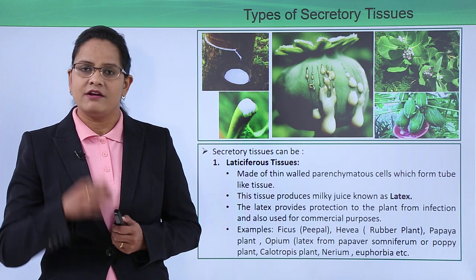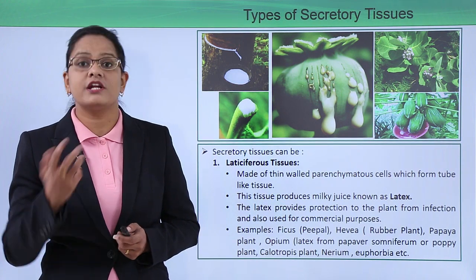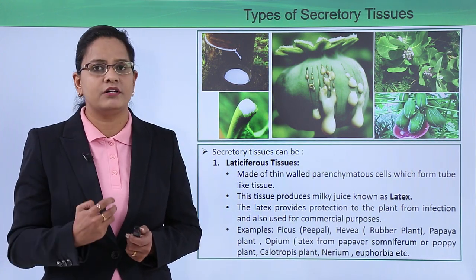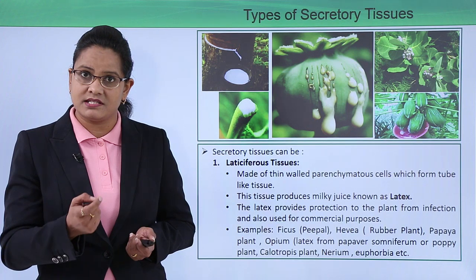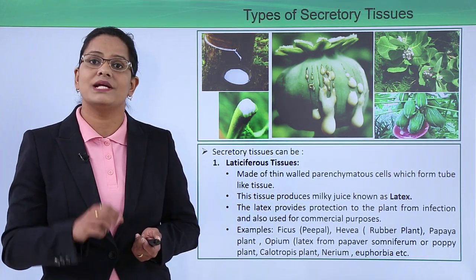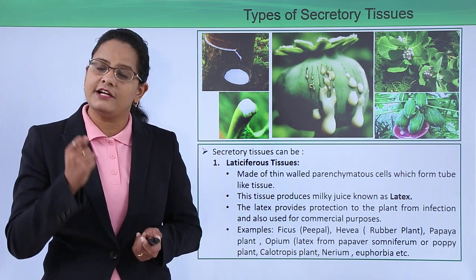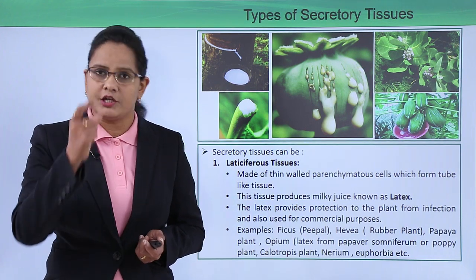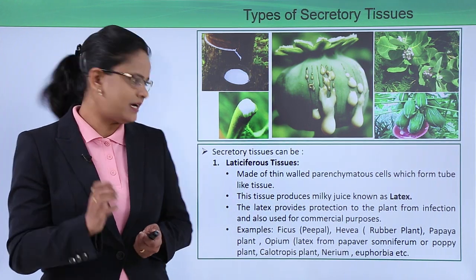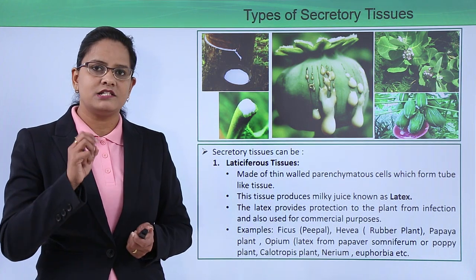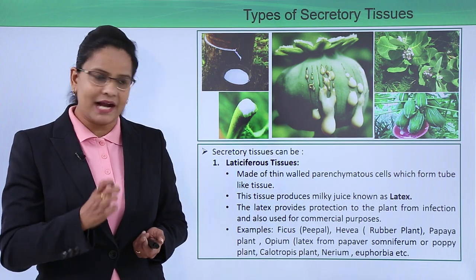There are two main types of secretory tissues. On the basis of their structure and what they are secreting, they can be categorized further. The first type is latticiferous tissue. As the word suggests, it secretes a substance known as latex. These are basically parenchymatous cells which have taken the form of a tube — tube-like parenchymatous cells with a duct that secretes a milky juice known as latex.